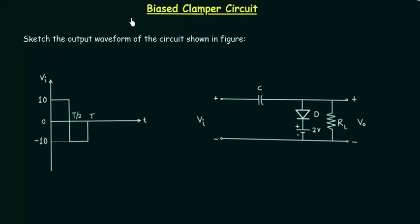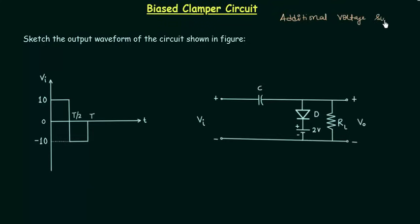In this lecture, I will explain the working of a biased clamper circuit. Like the clipper circuit, we can also bias the clamper circuit. We use biasing in the clamper circuit to obtain additional voltage swing. I will explain the biased clamper circuit with the help of one example.